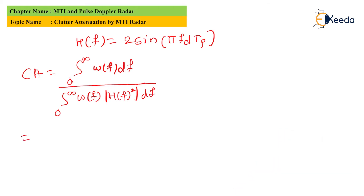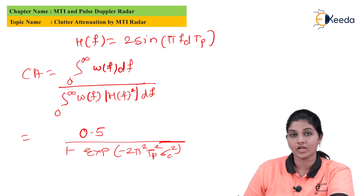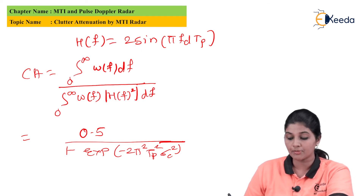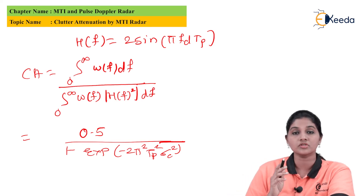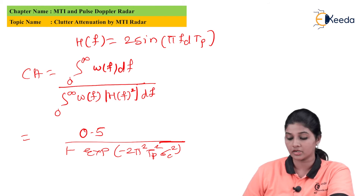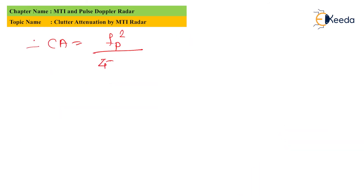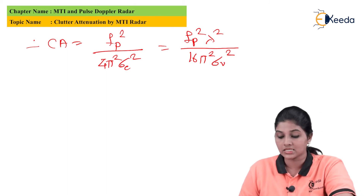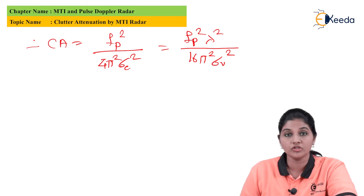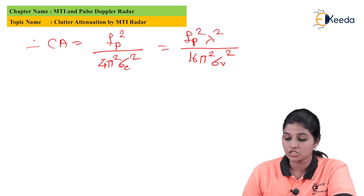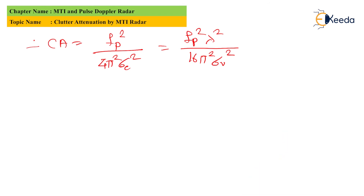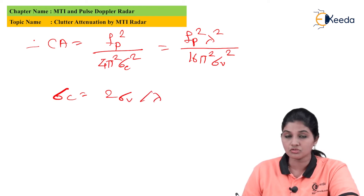Simplifying the equation further, we obtain: clutter attenuation equals 0.5 divided by (1 minus exp(−2π²·T_p²·σ_c²)). This is the clutter attenuation of the single delay line filter. Solving further because the denominator contains an exponential factor, the clutter attenuation becomes f_p² divided by (4π²·σ_c²), which also equals f_p²·λ² divided by (16π²·σ_v²), where σ_c equals 2·σ_v divided by λ.